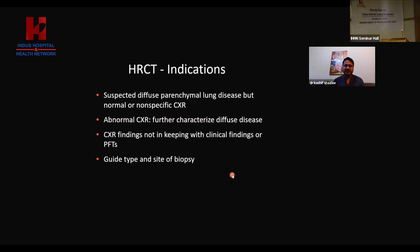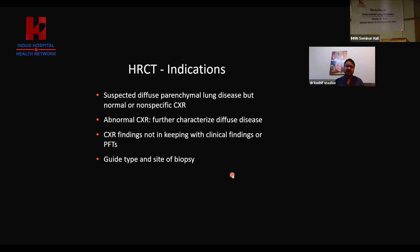The indications for HRCT: number one is diffuse parenchymal lung disease. Number two, the abnormal chest X-ray when the pulmonologist wants to discover more and have a better idea of what is going on in the lungs. Chest X-ray findings not in keeping with clinical findings or a pulmonary function test — this is another criteria for ordering HRCT. And sometimes CT scan is also required for guided biopsies.